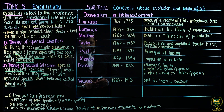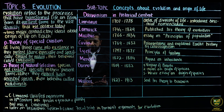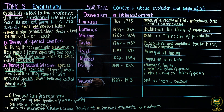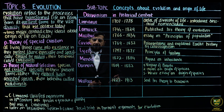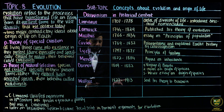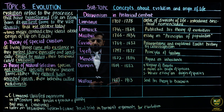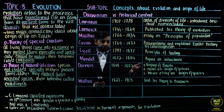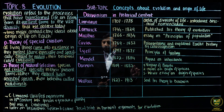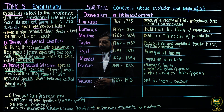Finally, there was Wallace, born in 1823 and died in 1913. He independently developed the same theory of evolution as Darwin around the same time.